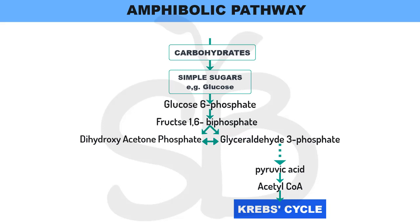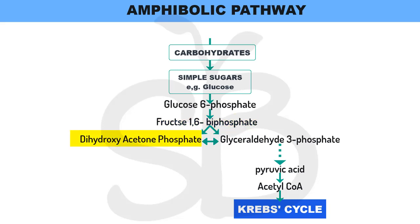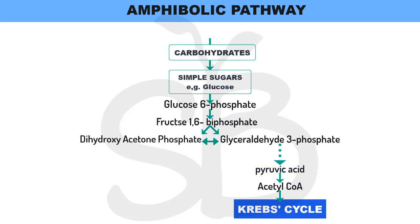So the important steps are: Glucose → Glucose 6-phosphate → Fructose 1,6-bisphosphate → the 6-carbon compound splits into two 3-carbon compounds (DHAP and Glyceraldehyde 3-phosphate). The last step of glycolysis produces two molecules of pyruvic acid. These undergo oxidative decarboxylation to form Acetyl Coenzyme A, which ends in the Krebs cycle.